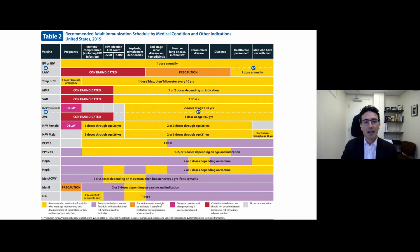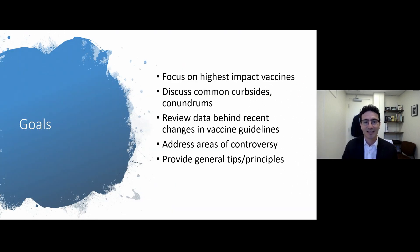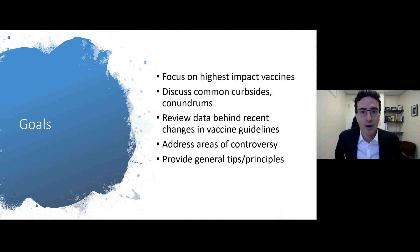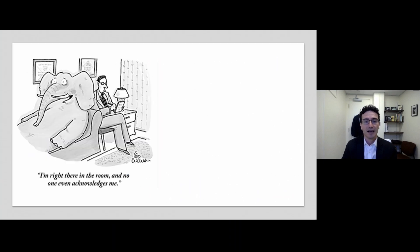Most of you probably know about the resource on the CDC website that is the vaccine immunization schedule for adults. I find it to be a very helpful resource in practice if you're trying to figure out who needs what vaccine when, or which vaccines a patient needs. If you start to look at it too long, it sort of starts to look like a word puzzle, and I'm not going to go line by line. My goals for today are to focus on the highest impact vaccines, discuss common curbsides or conundrums in clinical practice, review data behind recent changes in vaccine guidelines, address areas of controversy, and provide general tips and principles.